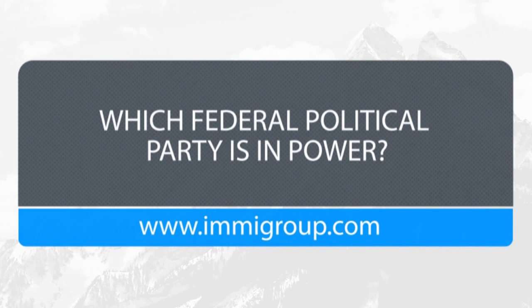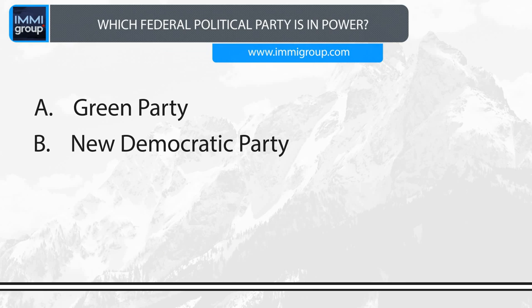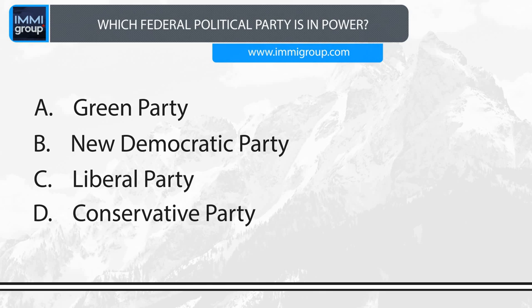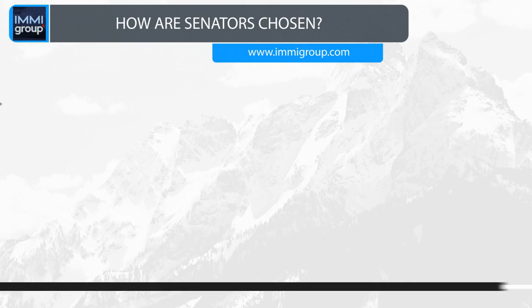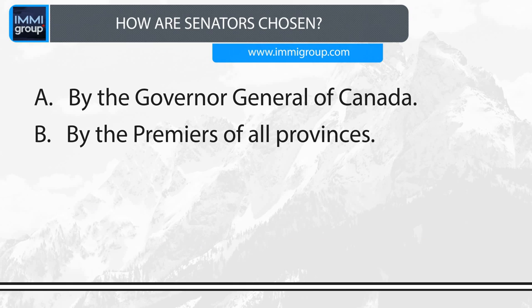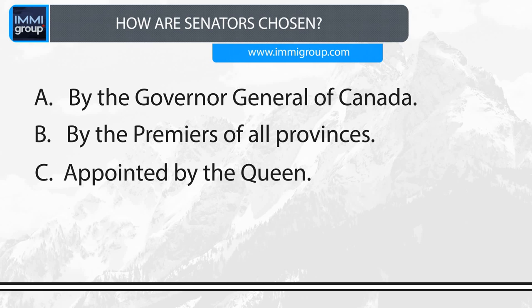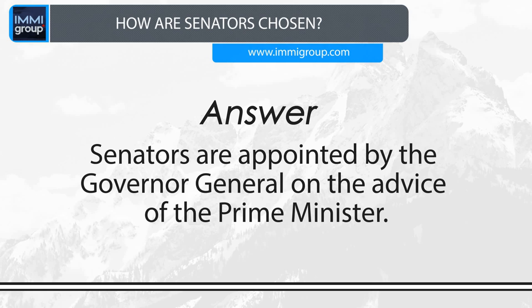Which federal political party is in power? A. Green Party. B. New Democratic Party. C. Liberal Party. D. Conservative Party. Answer: Conservative Party. How are senators chosen? A. By the Governor General of Canada. B. By the Premiers of all provinces. C. Appointed by the Queen. D. Senators are appointed by the Governor General on the advice of the Prime Minister. Answer: Senators are appointed by the Governor General on the advice of the Prime Minister.